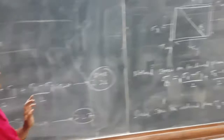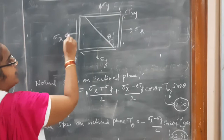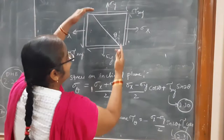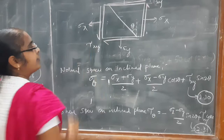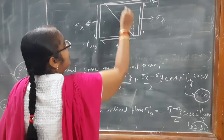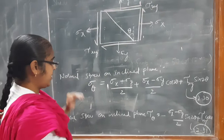Now let us come to the third case — element subjected to biaxial stress along with shear. Along with sigma x (stress along x-axis) and sigma y (stress along y-axis), there is also a shear stress tau xy. The stress acting parallel to the surface is known as shear stress. So the member has stress along x-axis, stress along y-axis, and a shear stress induced on it. How do we find the normal stress and tangential stress on this inclined plane?